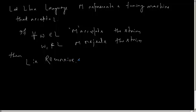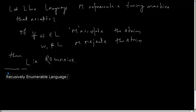Now there is another language called recursively enumerable language. If a language is recursively enumerable, that means there exists a Turing machine M that accepts the strings of this language, but for other strings which do not belong to this language, the Turing machine may halt or may go into an infinite loop.